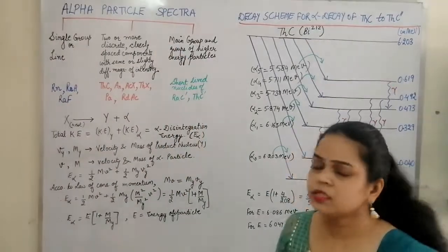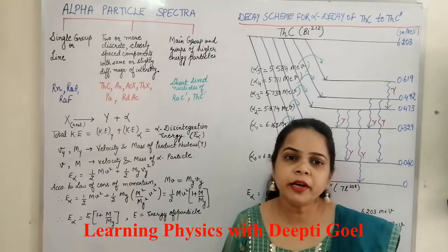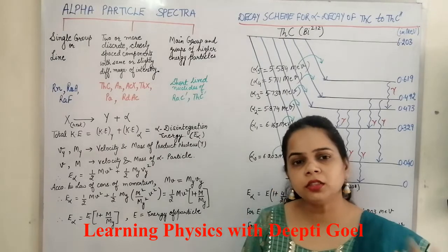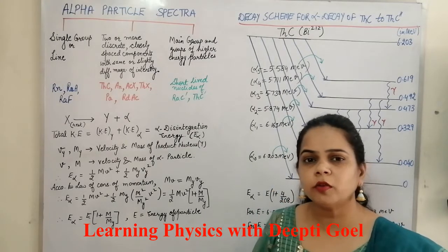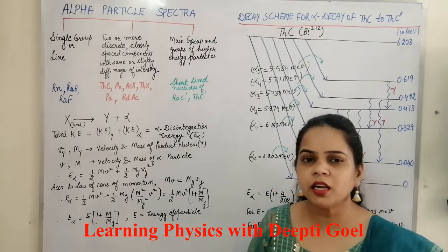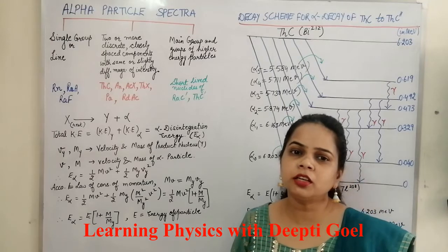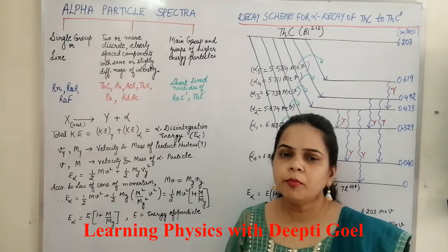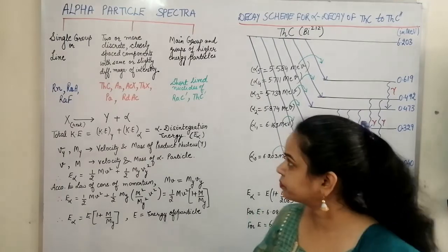These parent nuclei emitted alpha particles consisting of two types of energies, and the difference in the energies of the two types of alpha particles emitted was very, very small.